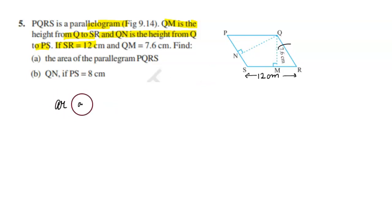Area of parallelogram equals height into base. So here our base is 12 into height, the altitude is 7.6. Multiply this.